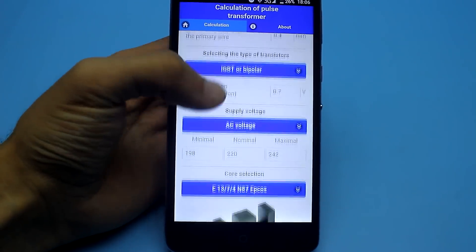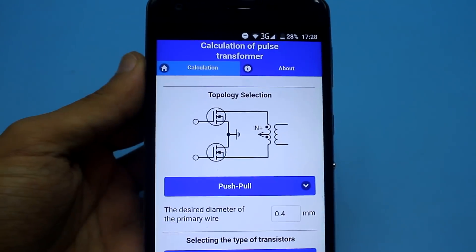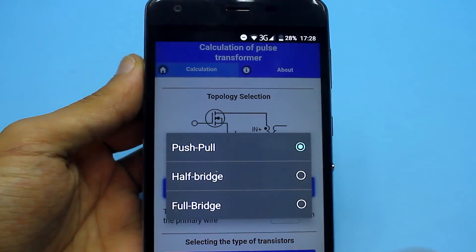Calculations can be made using our mobile application. Links to the example of calculating a pulse transformer and the application itself you can find in the description.